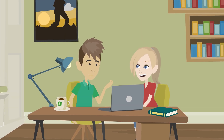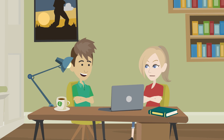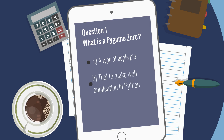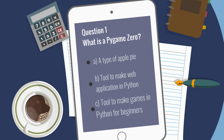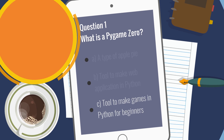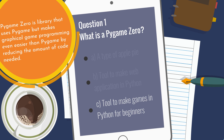Let's take quizzes to review this lesson. Question 1: What is PyGame Zero? A. A type of Apple Pie. B. Tool to make web applications in Python. C. Tool to make games in Python for beginners. The answer is C. PyGame Zero is a library that uses PyGame but makes graphical game programming even easier than PyGame by reducing the amount of code needed.